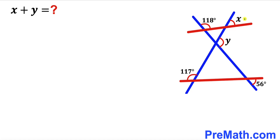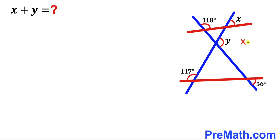Welcome to pre-math. In this video we have a bunch of straight lines crisscrossing each other, as you can see in this given diagram. As a result, we have this angle equal to 117 degrees, this angle as 118 degrees, and this angle as 56 degrees. Moreover, this angle is represented by x, whereas this angle is represented by y. Our task is to find the value of the sum x plus y.